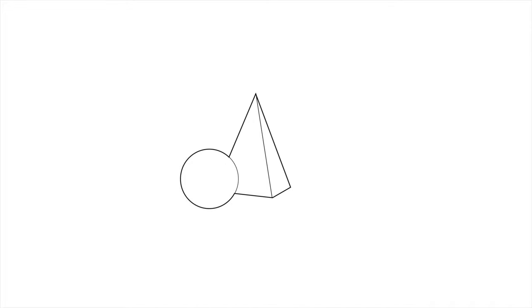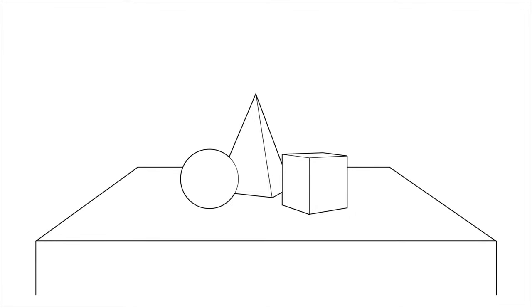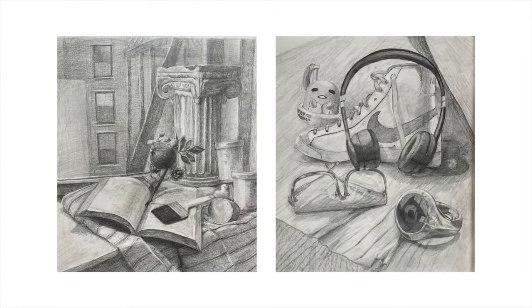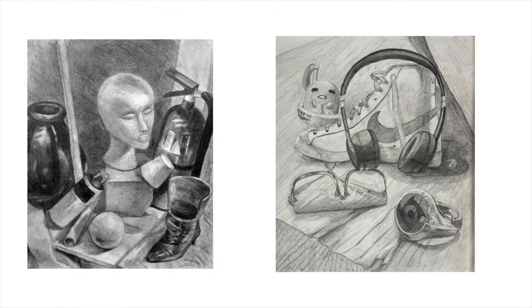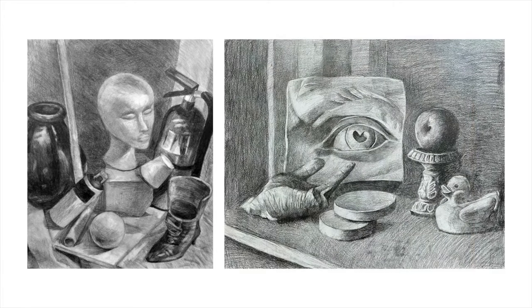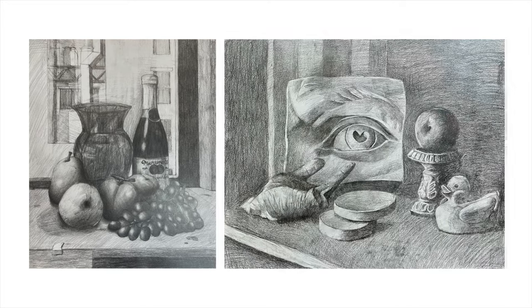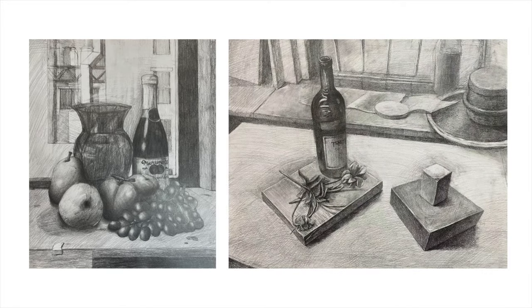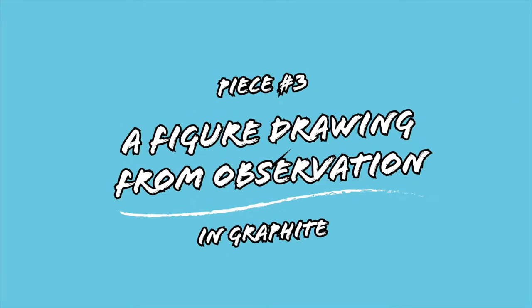Piece two: a still life from observation, graphite on paper. Using at least three items composed as a still life on a surface in front of you, using graphite pencil on paper. Think about mark making and how to portray different materials. Focusing on how reflection works and how light and shadows hit depending on texture will make for a great final drawing. Good contrast, accurate shape making, and interesting compositions make these still lifes successful. Using a variety of objects with different qualities can make your still life dynamic and interesting.